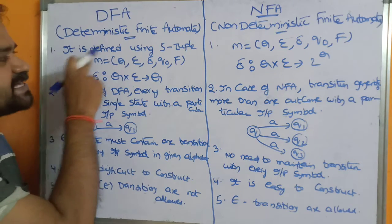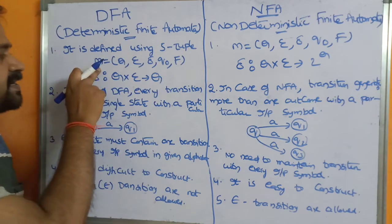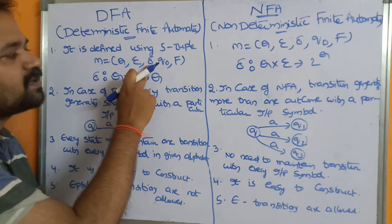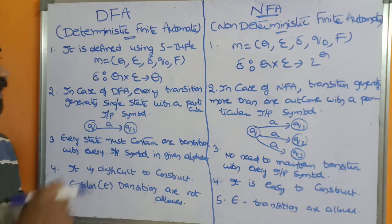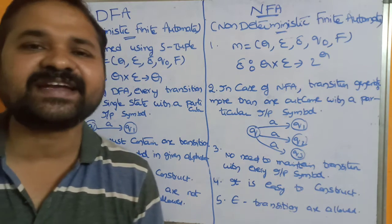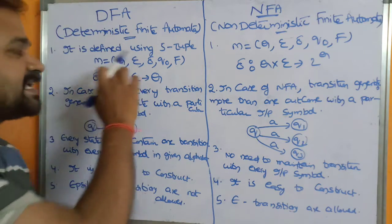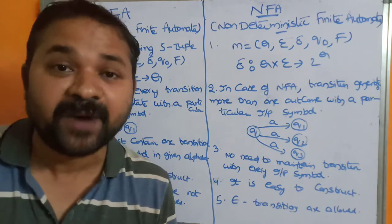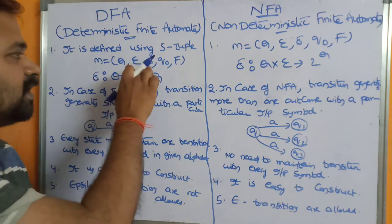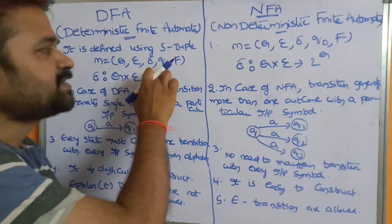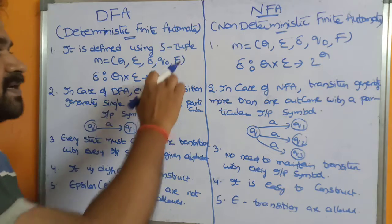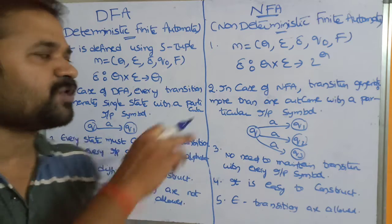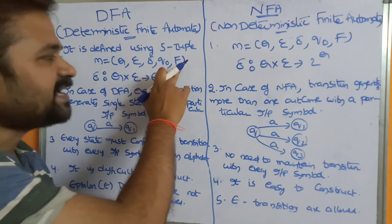The first point: DFA is defined using a five-tuple M, where M = (Q, Σ, δ, q₀, F). Here Q means a finite set of states, Σ means input alphabet containing some symbols, q₀ means initial state, and F means the set of final states. The machine contains only one initial state but can have multiple final states.